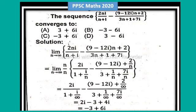In this lecture, I will solve Pakistan Publisher's Mission 2020. I am securing that is the sequence 2ni divided by n+i minus (9-12i) into n+2 divided by 3n+1+7i converges to solution that is,